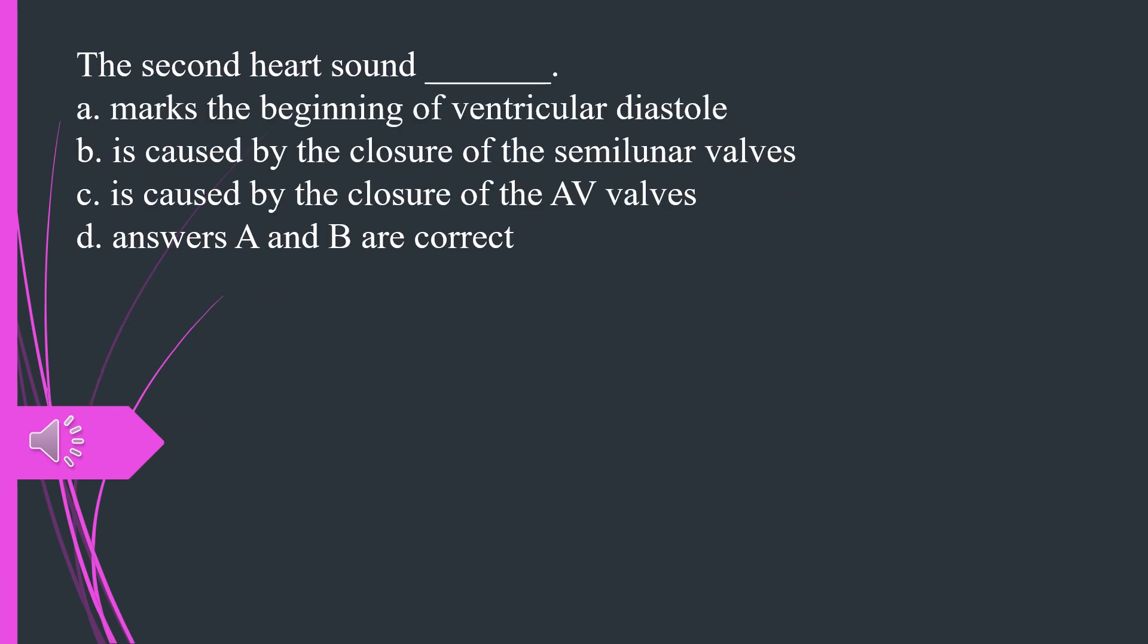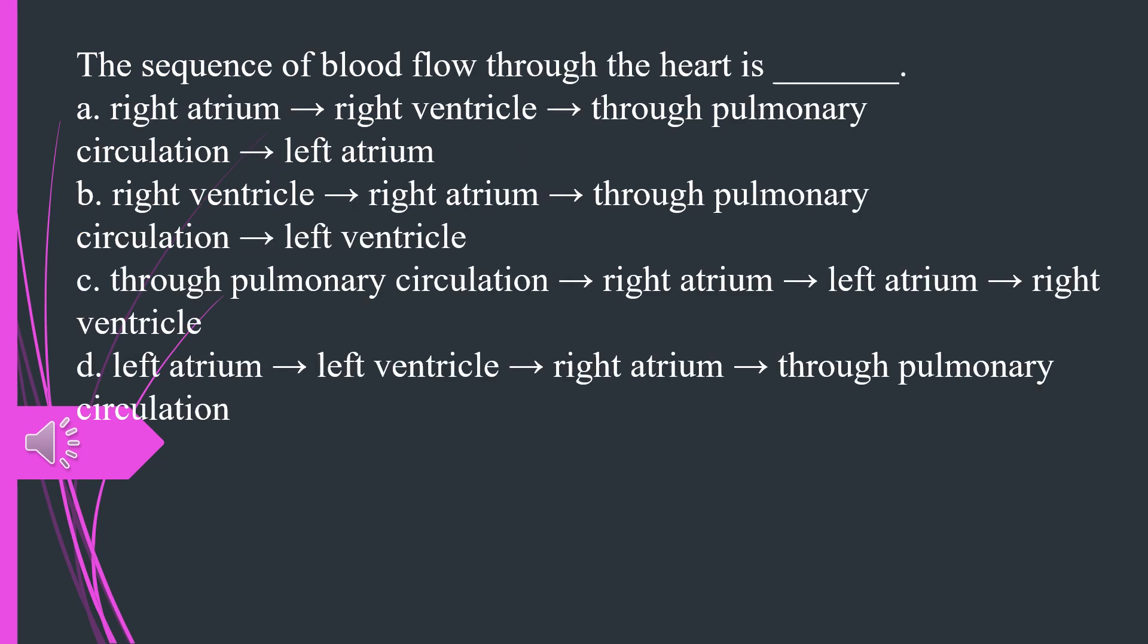The second heart sound A. Marks the beginning of ventricular diastole B. Is caused by the closure of the semilunar valves C. Is caused by the closure of the AV valves D. Answers A and B are correct. The answer is D, answers A and B are correct.